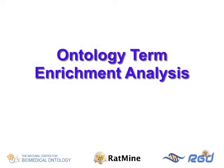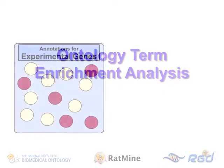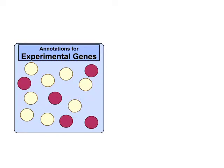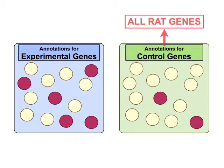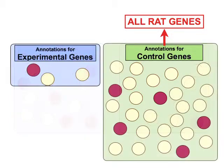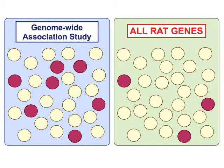Ontology term enrichment analysis is a statistical calculation of how frequently a particular term appears as an annotation in an experimental group of genes or proteins compared to how often that term appears in the annotations for a control set of genes or proteins. RatMine currently uses the set of all rat genes as its control group. Although in some situations, such as when only a small group of genes was tested, this may not be the best control. Even in those cases, it can be used as a first approximation. And for large-scale tests, such as genome-wide association studies, the set of all rat genes is the appropriate control.